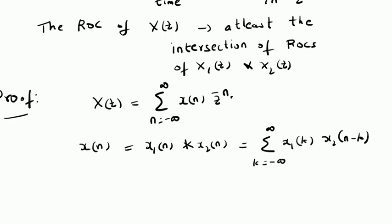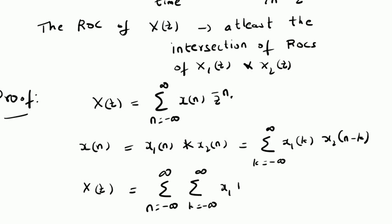This is the definition of convolution. We now substitute this expression into the Z transform definition. X of Z can be written as the summation from n equal to minus infinity to plus infinity, where X of n is replaced by the summation from k equal to minus infinity to plus infinity of X1 of k multiplied by X2 of n minus k, all multiplied by Z to the power minus n.